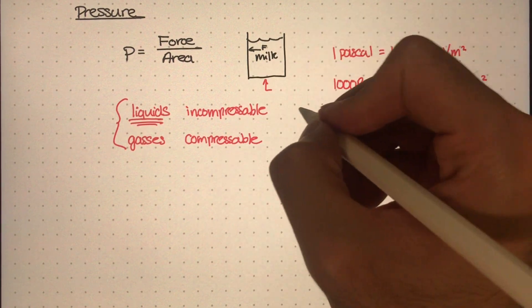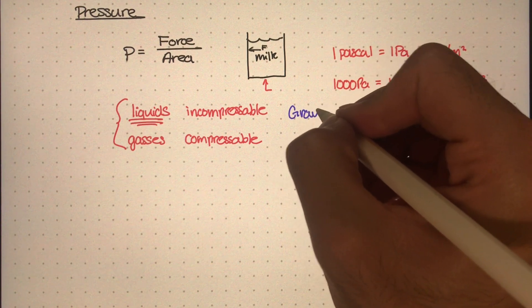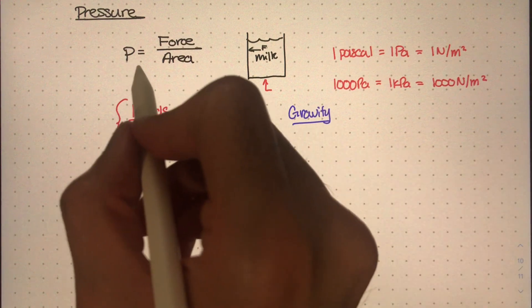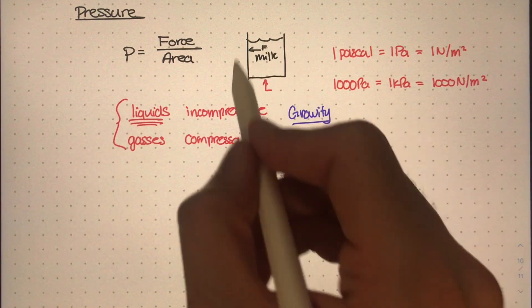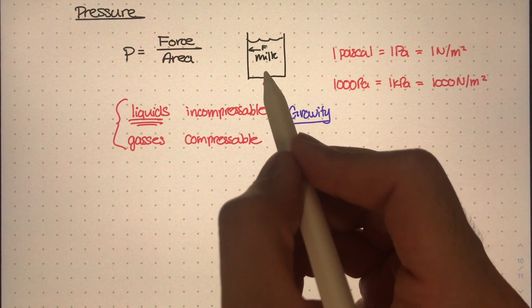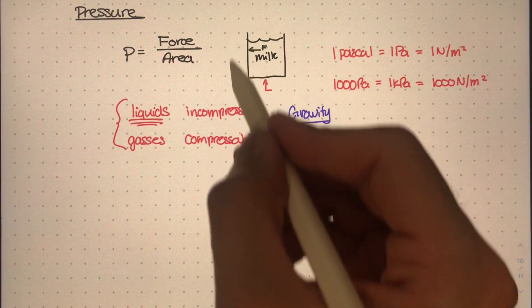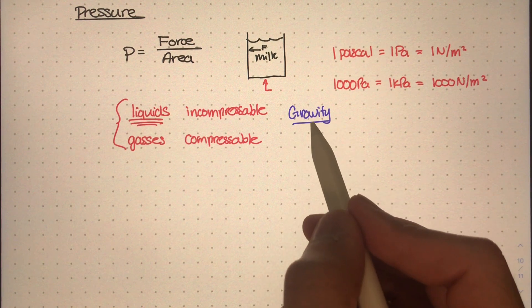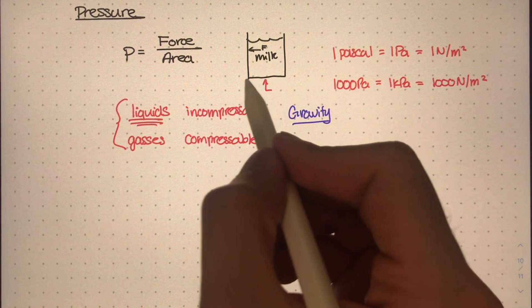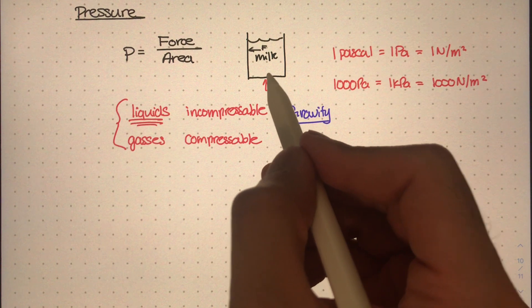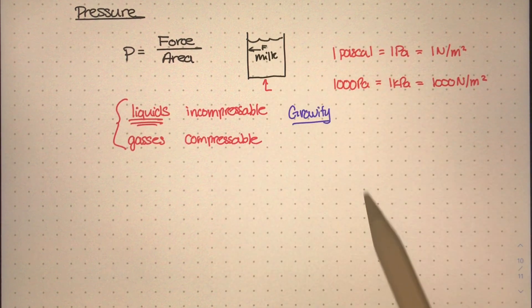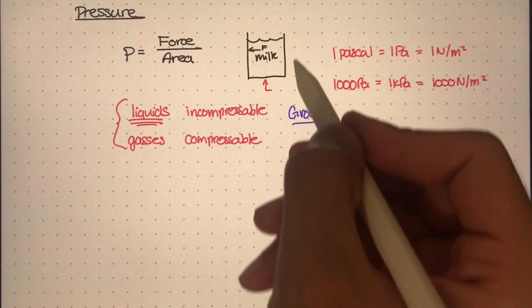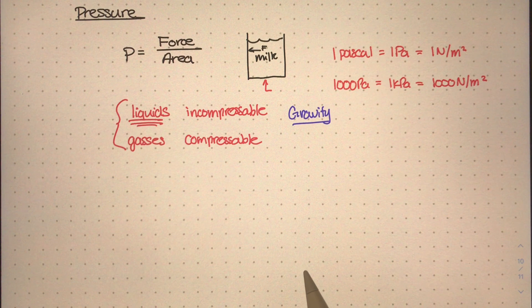Because of that, gravity plays a pretty important factor in studying pressures caused by liquids. If you're in space, the liquid isn't really going to cause any pressure on the sides of the container. But if you're closer to Earth where gravity is strong, the pressure at the bottom of the container is going to be more than at the top or somewhere in the middle, because gravity is pulling these liquid molecules down to the bottom.